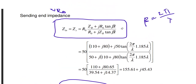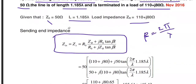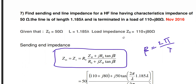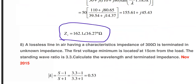This is the sending end impedance of the high frequency line. If the problem does not mention a high frequency line, use the first unit formula for ordinary transmission lines — the input impedance formula is somewhat different. This is one of the important 8 mark problems from unit 2.